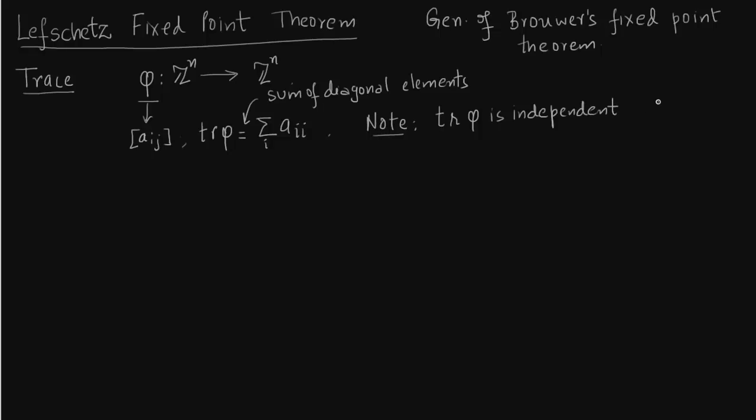You just need to make a note that the trace is independent of the choice of basis. This is a result from linear algebra. You take the trace of a matrix, it is independent of whatever choice of the basis you make.